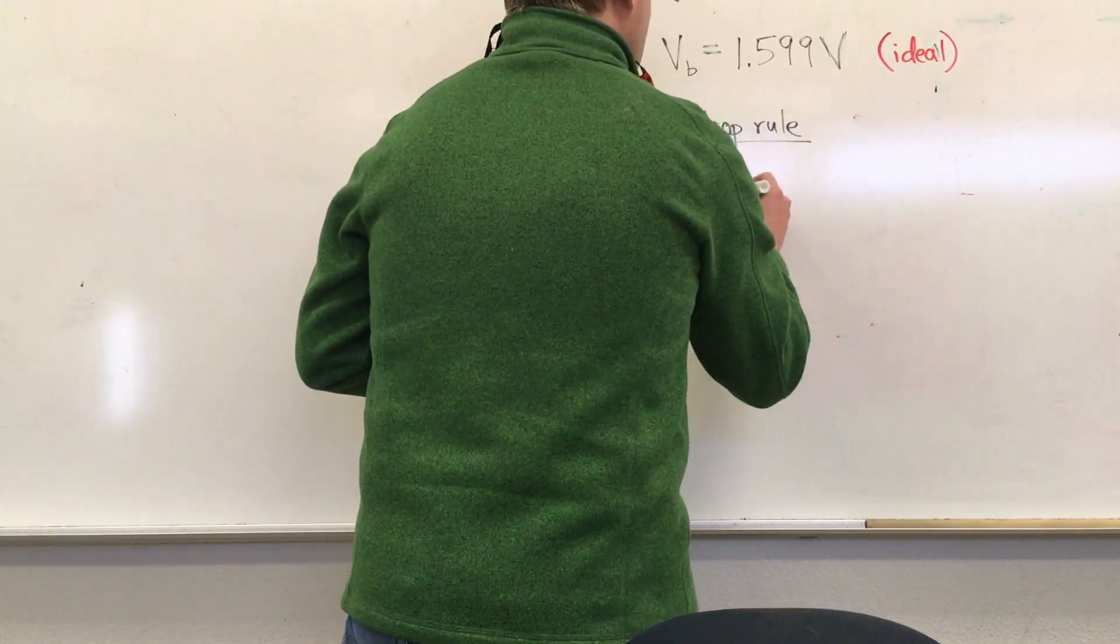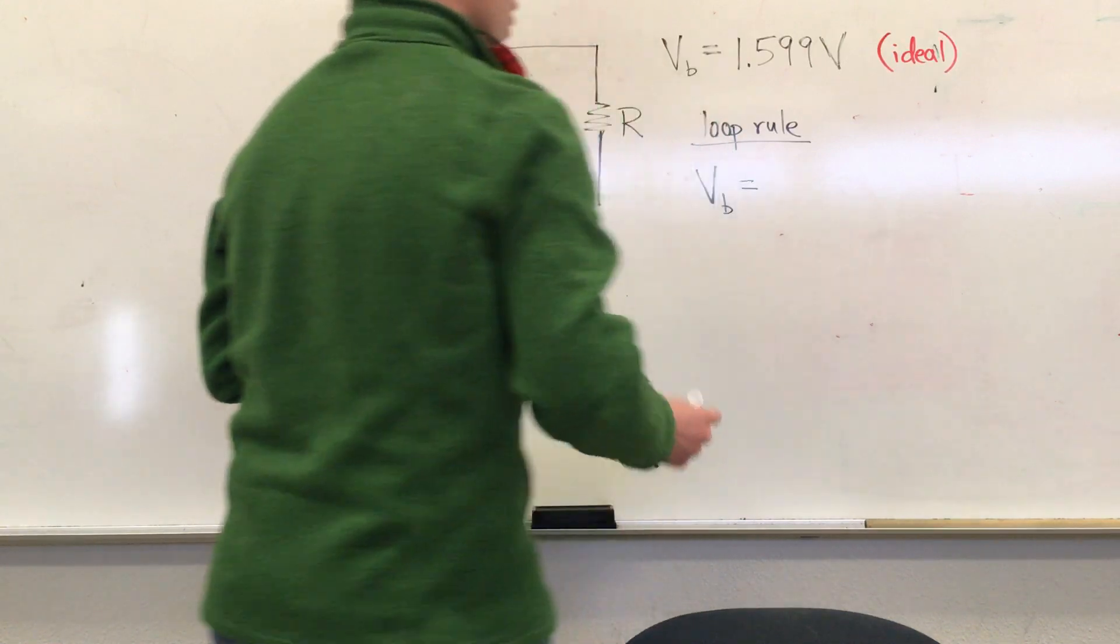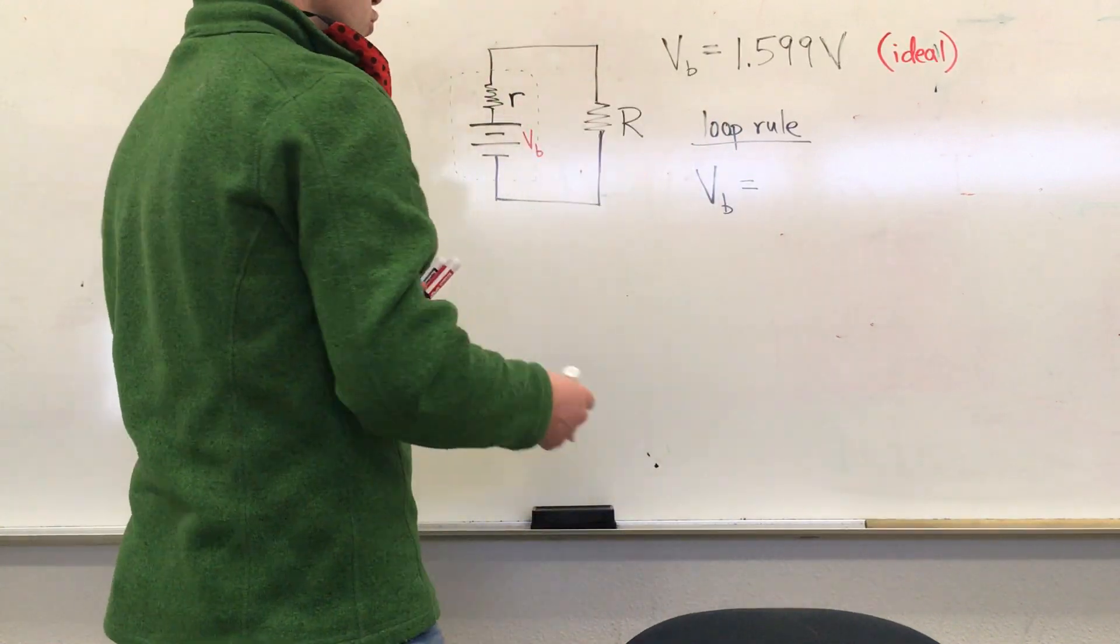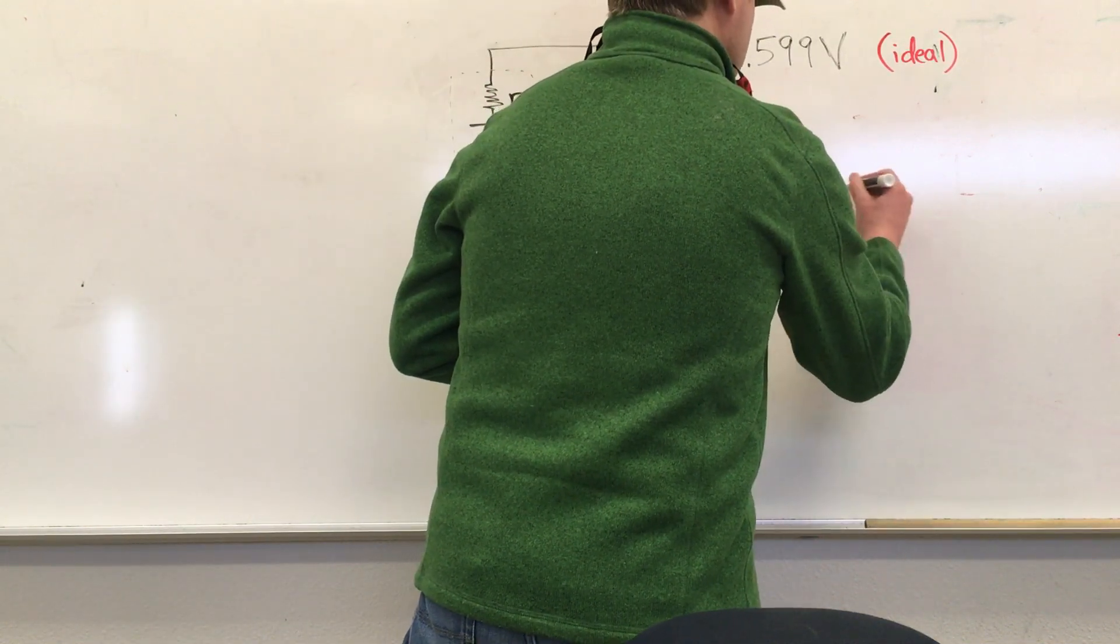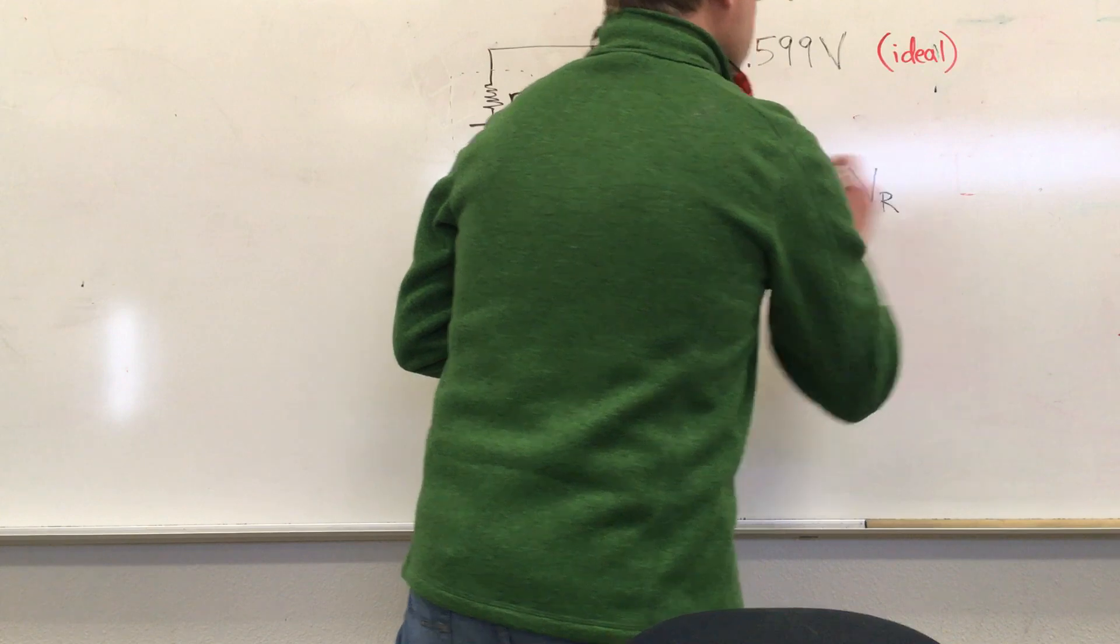The loop rule tells us that the supplied voltage, which in this case is V sub B, has to equal the voltage drops as you go around the circuit. So that's V sub little r plus V sub big R.